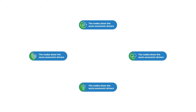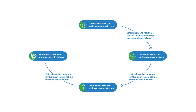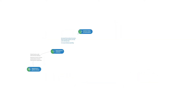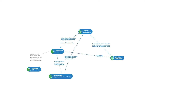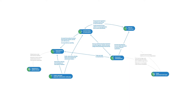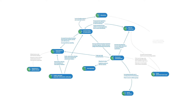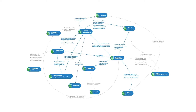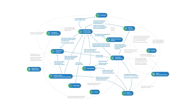System diagrams are also available that show a graphical representation of the scenario narrative, highlighting the interrelationships between important socioeconomic drivers. The detailed information in the narratives and system diagrams can be used by researchers and policy communities in qualitative studies or for providing context to further quantifications needed by modelling communities. They can also be used as the basis for further spatial or sectoral elaboration for local case studies.